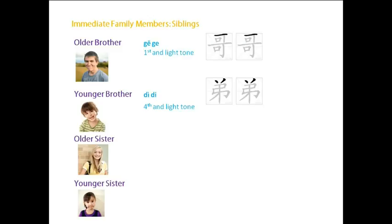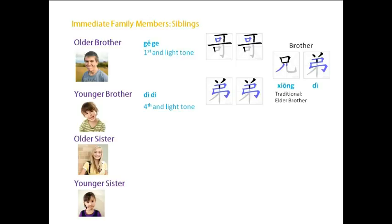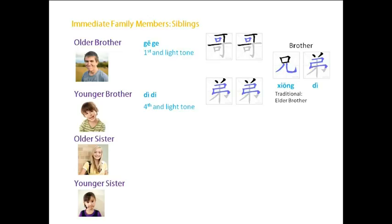If you want to refer to brothers collectively, you can say 兄弟. 兄 is a traditional word for older brother. But 兄弟 in modern times, we use it to mean people that are not biologically related to you, but are great mates of yours that you consider to be your brothers.